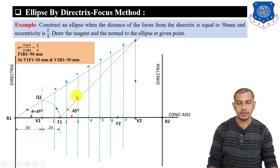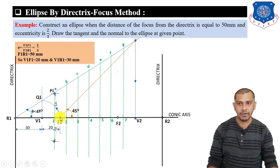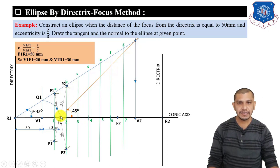Now, measure the arc length 1A on the compass and from F1 as center, give an arc on line 1 on both sides to get points P1 and P1'. Similarly, measure arc length 2B and from F1 give an arc to get P2 and P2'. Measure arc length 3C from F1 as center, give an arc on both sides to get P3 and P3'.